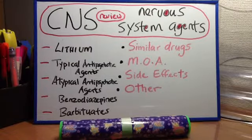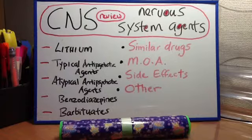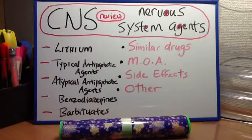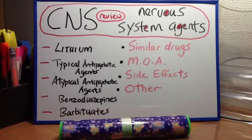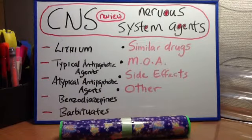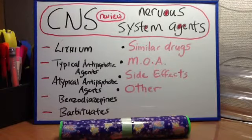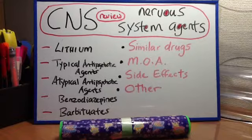Typical antipsychotic agents. Similar drugs: haloperidol, fluphenazine, chlorpromazine, and thioridazine. MOA: blocks post-synaptic dopamine D2 receptors. Clinical uses: positive symptoms of schizophrenia, delirium, and agitation. Side effects: sedation, anticholinergic side effects such as dry mouth, urinary retention, and blurry vision, extrapyramidal side effects such as dystonia and muscle spasms, galactorrhea and amenorrhea. Other: neuroleptic malignant syndrome.